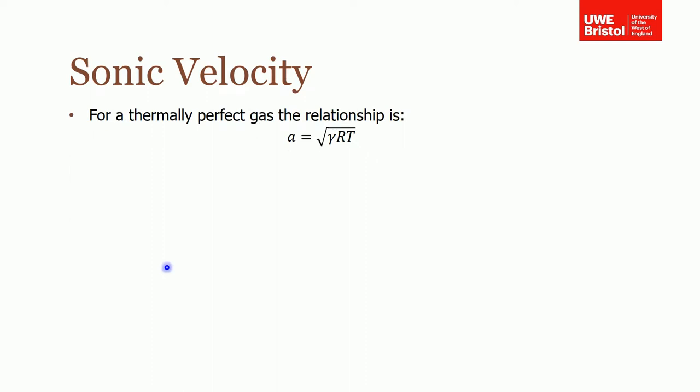Sonic velocity is the maximum velocity that this wave can move through the fluid. For a thermally perfect gas, the relationship is given by a equals the square root of gamma R T, where a is the sonic velocity, gamma is for the fluid you're interested in, and T is the absolute temperature in Kelvin.